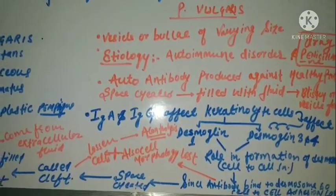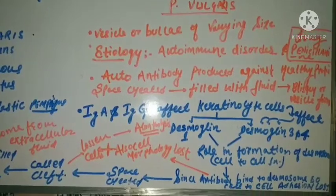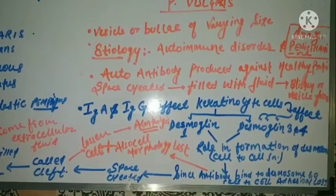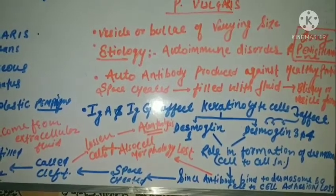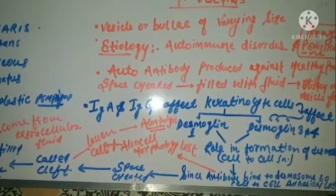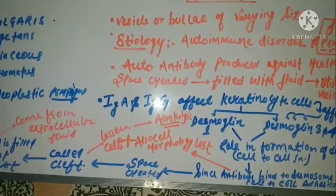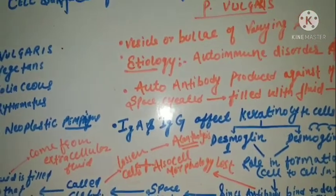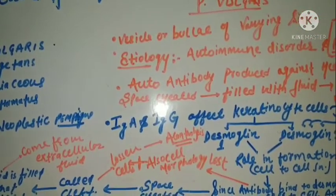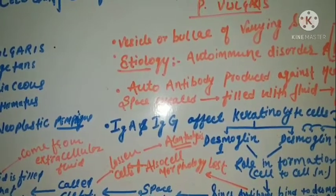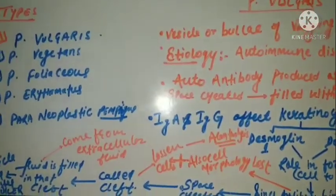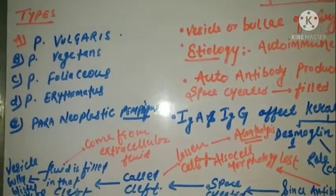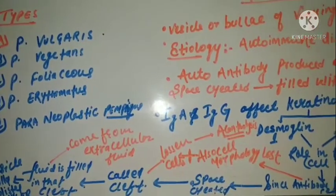When there is a defect in desmoglein 1 and desmoglein 3, the cell binding is impaired. Antibodies bind to the desmosome, so the cell-to-cell junction is lost. Once the junction is lost, a space called a cleft is created. The cells become loose with irregular morphology — this is called acantholysis. Extracellular fluid then fills the cleft, forming a vesicle, bulla, or blister.